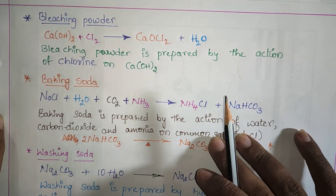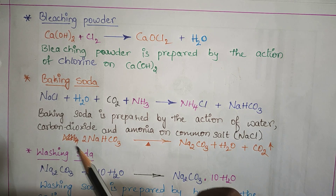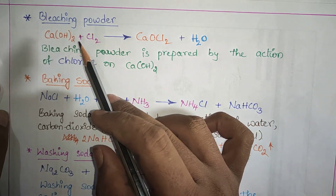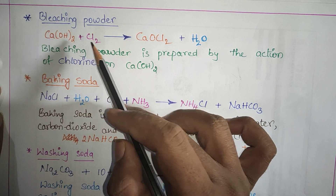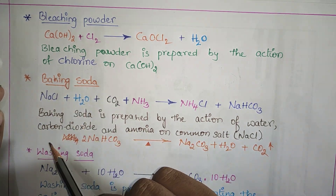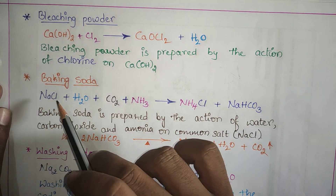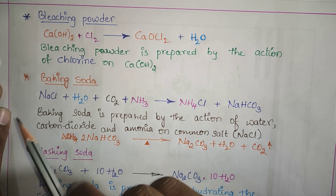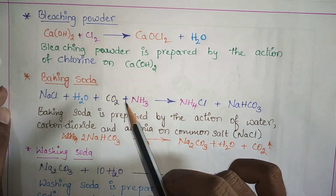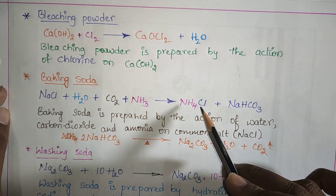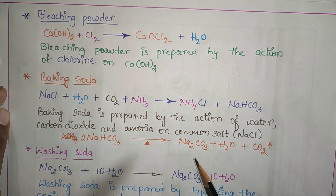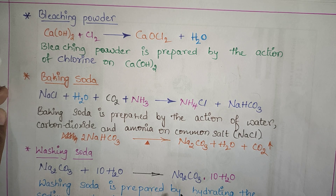The next salt is baking soda. For its preparation we use common salt itself. The chlorine obtained from the chloralkali process is also used here. When common salt is reacted with ammonia, carbon dioxide, and water, we get ammonium chloride (NH₄Cl) and sodium hydrogen carbonate (NaHCO₃). This sodium hydrogen carbonate is what we call baking soda.